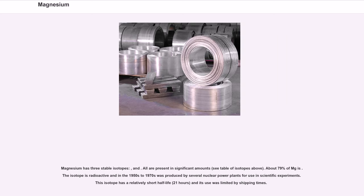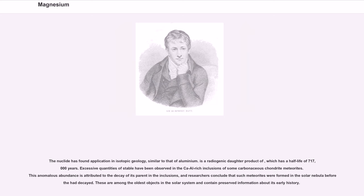Magnesium has three stable isotopes, and all are present in significant amounts. About 79% of Mg is the most common isotope. A radioactive isotope was produced by several nuclear power plants from the 1950s to 1970s for use in scientific experiments. This isotope has a relatively short half-life of 21 hours, and its use was limited by shipping times. The nuclide has found application in isotopic geology, similar to that of aluminium. It is a radiogenic daughter product with a half-life of 717,000 years. Excessive quantities of a stable isotope have been observed in the calcium-aluminium-rich inclusions of some carbonaceous chondrite meteorites, attributed to the decay of its parent in the inclusions. Researchers conclude that such meteorites were formed in the solar nebula before the parent had decayed, making these among the oldest objects in the solar system, containing preserved information about its early history.